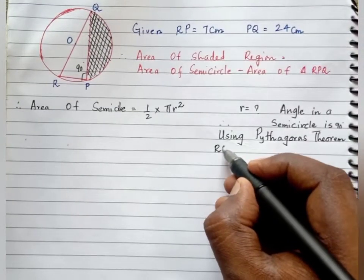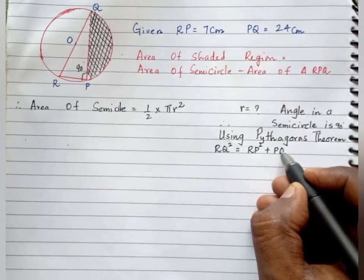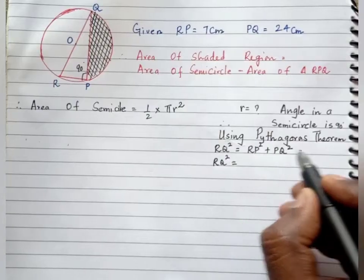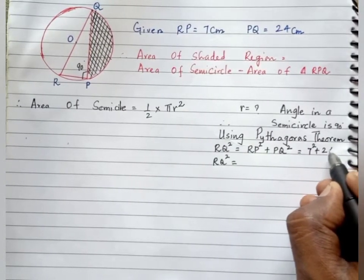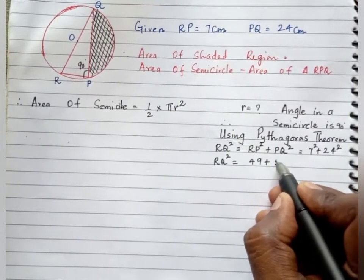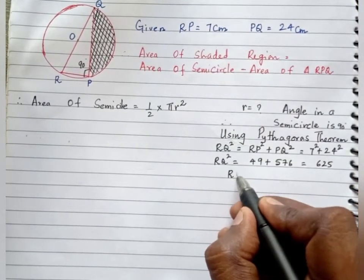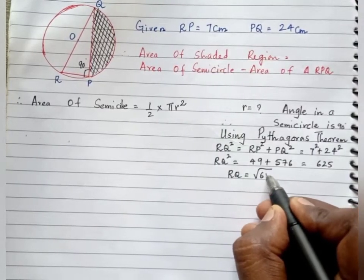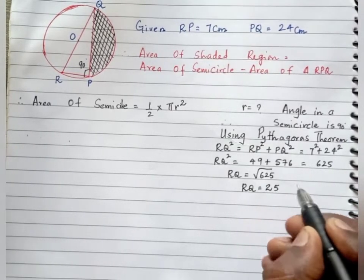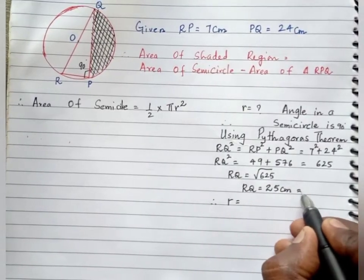RQ square equals RP square plus PQ square. RP is 7 centimeter and PQ is 24 centimeter. So 7 square is 49 and 24 square is 576. 576 plus 49 gives 625. Therefore RQ equals square root of 625, which is 25 centimeter. Since RQ is the diameter, radius equals 25 by 2.